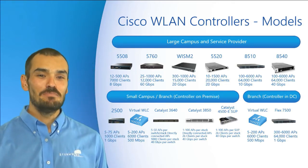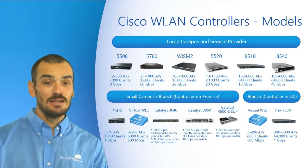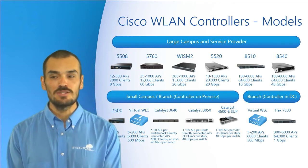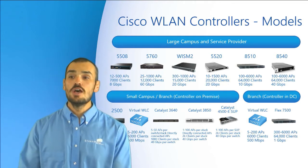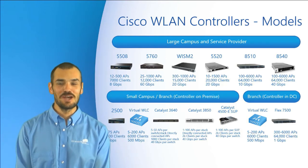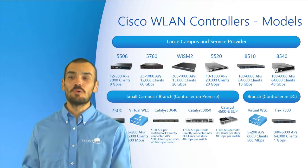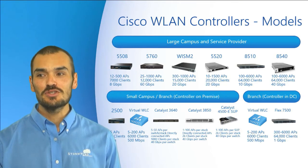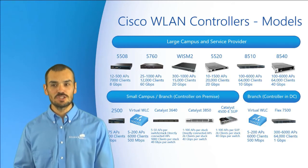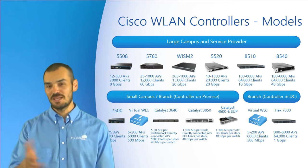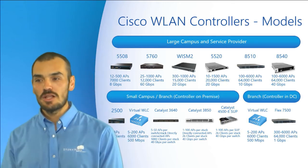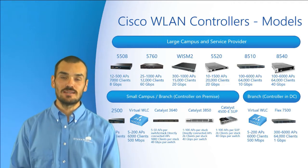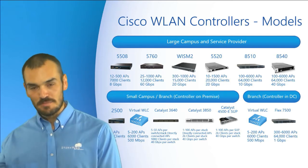The 5520 series is intended for mid-sized to large deployments and supports 1,500 access points in FlexConnect, Central, Mesh, or Office Extend modes, 20,000 clients, at 20 gigabit per second throughput. It supports the same special features as both the 2500 and the 5508 series. The 5760 series is the first iOS-based wireless LAN controller — the previously discussed models are all AirOS-based controllers, so basically a different internal operating system. Mid-to-large enterprises: supports 1,000 access points in Central mode, 1,000 tags, and 2,000 clients at 60 gigabits per second throughput, supporting the same special features as the models just discussed.